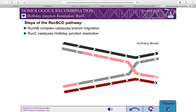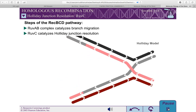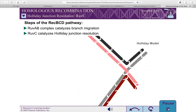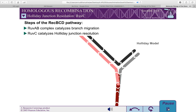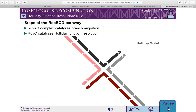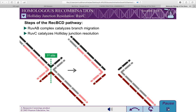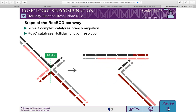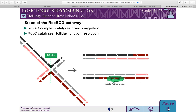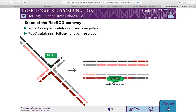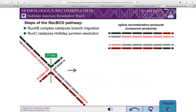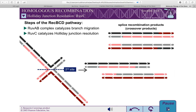The final step of the REC-BCD pathway is Holliday junction resolution. Again, this step is similar to that of the Holliday model, except it can involve two Holliday junctions. As will be shown, the possible products are the same: patch recombination products, also called non-crossover products, or splice recombination products, also called crossover products.